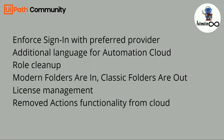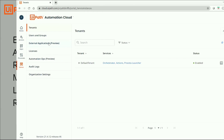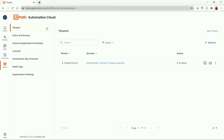Another update is that the Action tab for Action Center has been removed from the Orchestrator service and is now available at the Automation Cloud level. Earlier it used to be under the Orchestrator tenant, but now we can see the Action tab in the Automation Cloud.